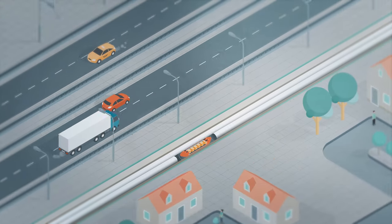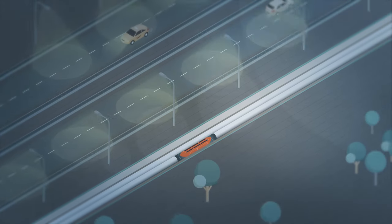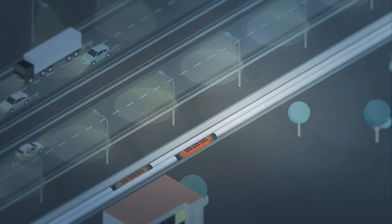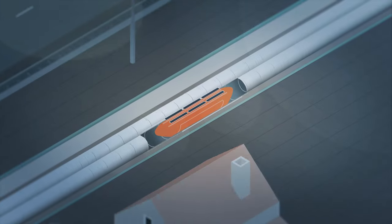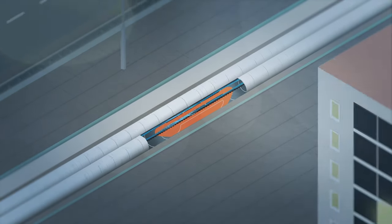Leveraging existing pipe technologies, Cargo Loop consists of a series of autonomous vehicles that travel inside a low-pressure environment using magnetic levitation and electric motors.